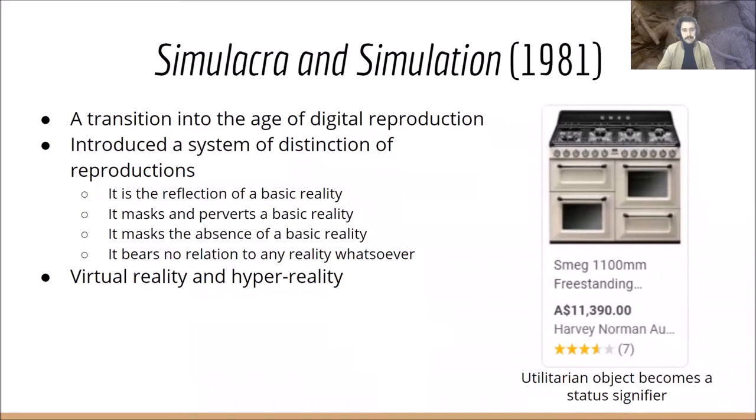Baudrillard had a particular obsession with using Disneyland and washing machines as examples of hyperreality — Disneyland as a perverted representation of cultural realities, presenting a kind of fantasy Germany, and washing machines as once purely functional utilitarian objects which had come to take on new value as cultural signifiers. I've put the brand Smeg here because that's what I think of — really nice things but no longer super functional. To Baudrillard, reproductions can be categorised into four tiers: reflections of reality, masking and perverting reality, masking the absence of reality, and hyperreality — which bears no relation to reality whatsoever.